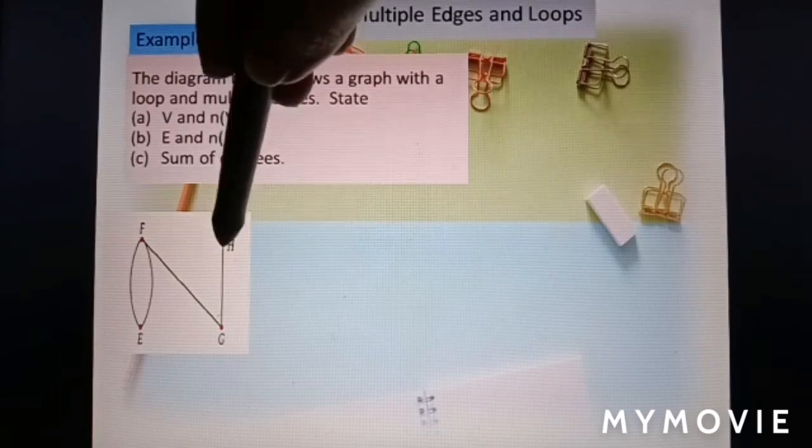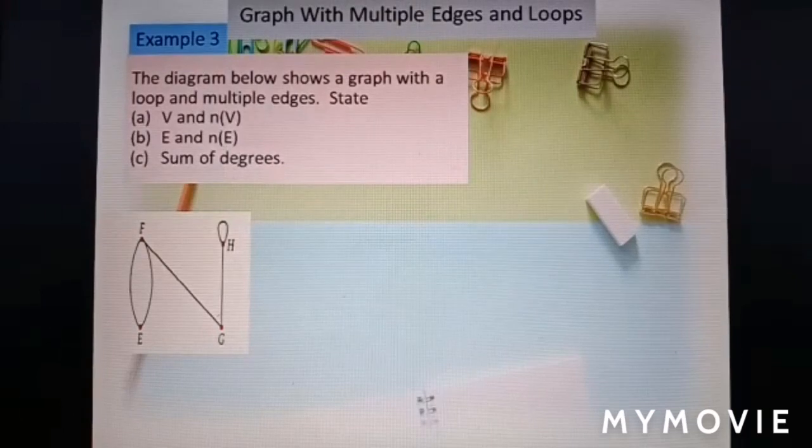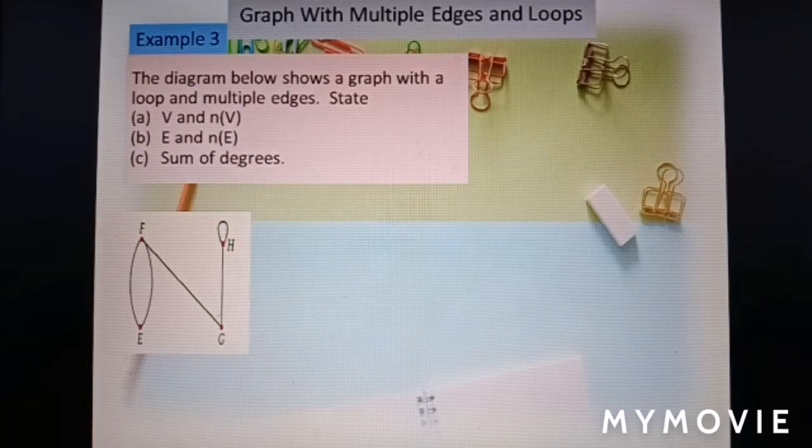What is loops? This is a loop. Loop involve one vertex only. The edge is in the form of an edge that starts and ends at the same vertex. Each loop adds 2 to the degree.